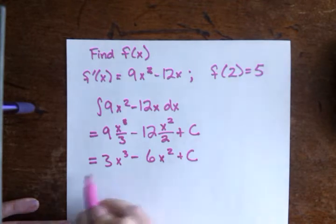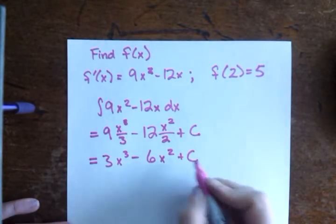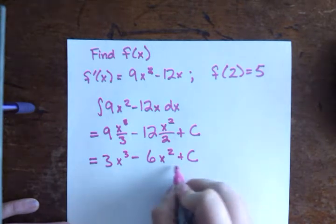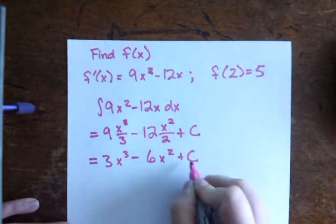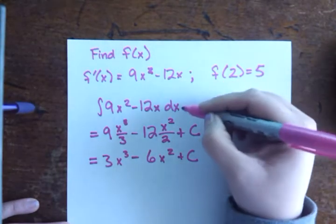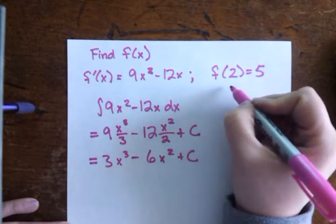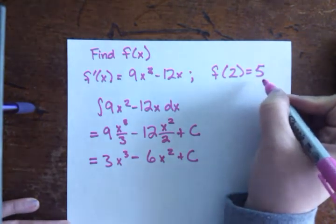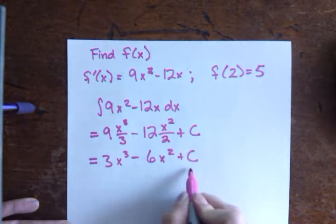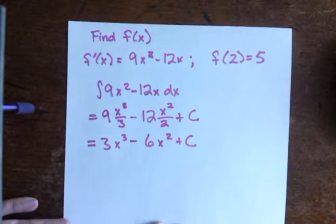And so this is f of x. This is what we're looking for. The only problem is that we can't have this constant hanging around here. We don't know what that is. There was no way to go back and get that just by taking this integral. But what they're telling us is they've given us this additional piece of information here, that if you look at f of 2, it's going to equal 5. So let's just write this one out, set it equal to 5, and solve for c, and then we'll know what we need.